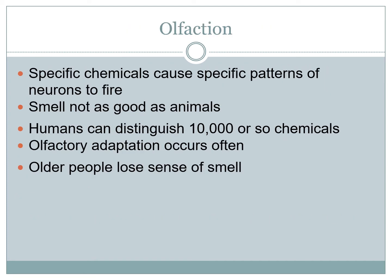Moving from chemoreceptors in the mouth to our second chemoreceptor: olfaction, the process of smelling. It's far more sensitive compared to the tongue, which essentially has five tastes. We don't actually know how many different receptor sites are in the olfactory system, but we know humans can distinguish around 10,000 different chemicals. It works similarly as a chemoreceptor, and like taste, as you move up in age you lose your sense of smell and taste. Many older people lose the sense of smell and tend to need highly seasoned food to taste anything.